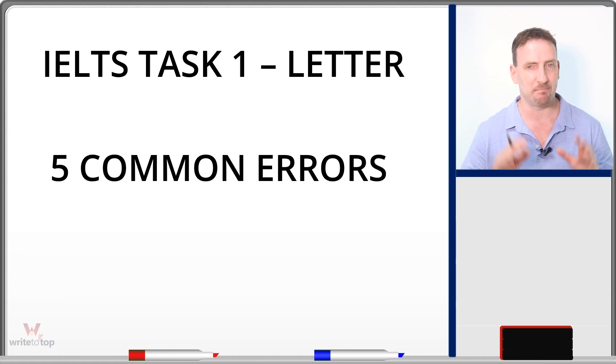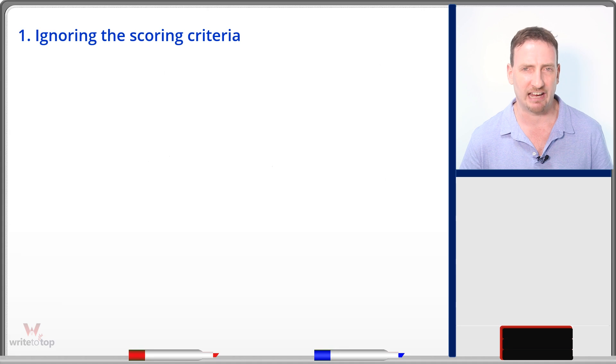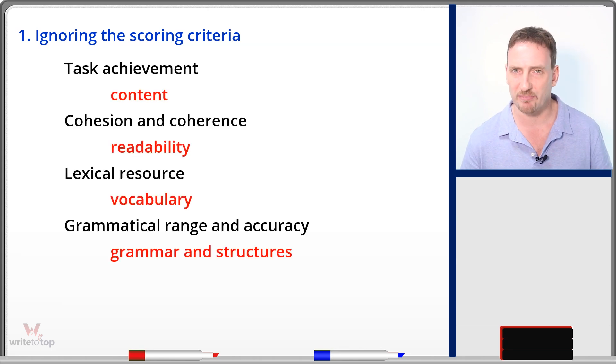So we're going to start with the same number one error that people make as the other two: ignoring the scoring criteria. Now, just because it's a letter or a summary or an essay does not mean that you're only concentrating on vocabulary and grammar. There are lots of other things to consider, especially your task achievement, the content, what are you saying, the ideas you have. The cohesion and coherence, making sure that ideas connect and progress from one to the next from beginning to end. Lexical resource, vocabulary, grammatical range, and accuracy.